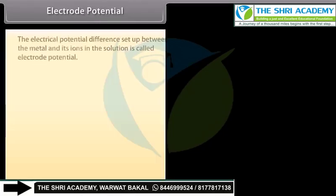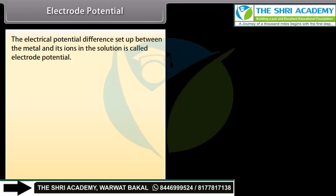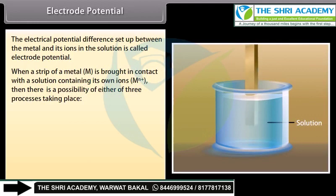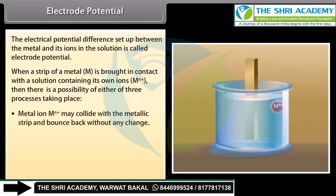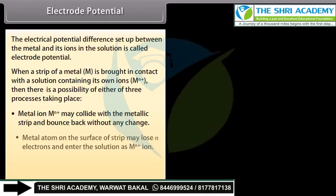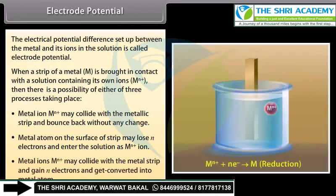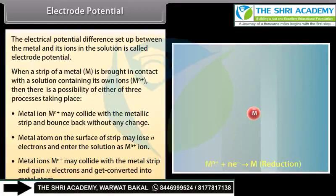Electrode Potential: The electrical potential difference set up between the metal and its ions in solution is called electrode potential. When a strip of metal is brought in contact with a solution containing its own ions, three processes are possible: metal ions may collide with the strip and bounce back without any change; metal atoms on the surface may lose n electrons and enter the solution as ions; or metal ions may collide with the strip and gain n electrons to be converted into metal atoms.